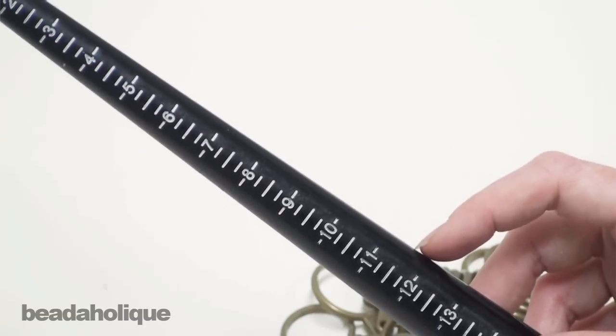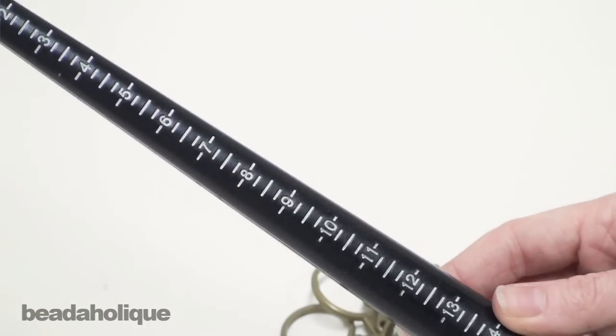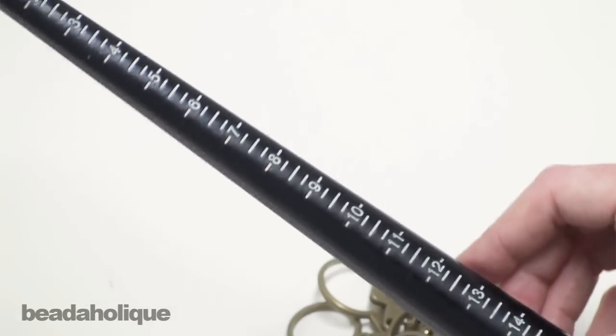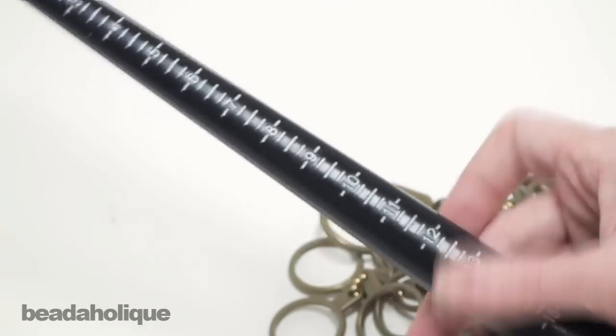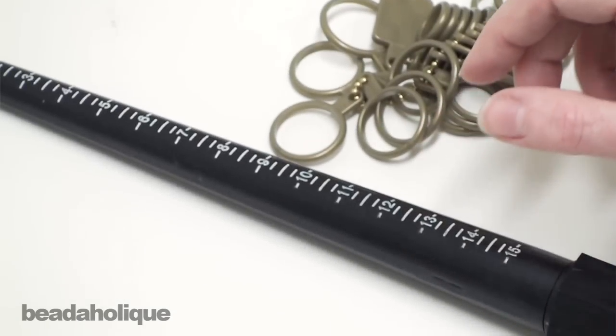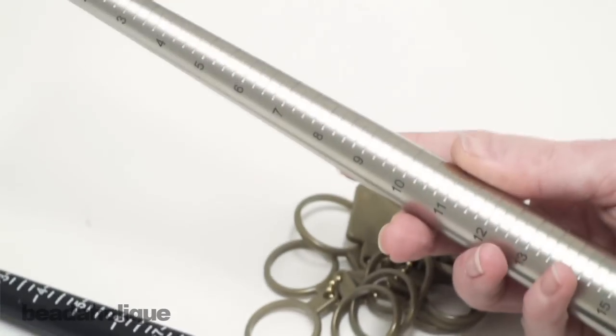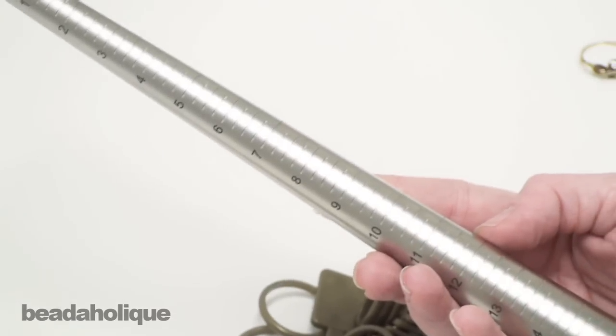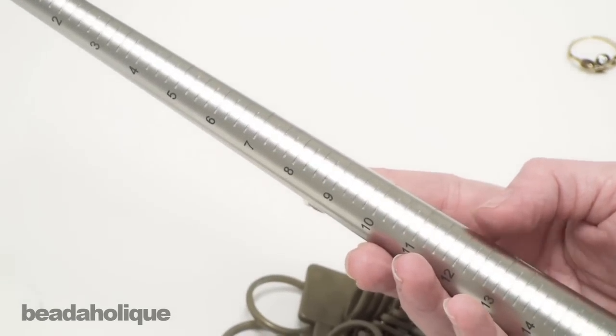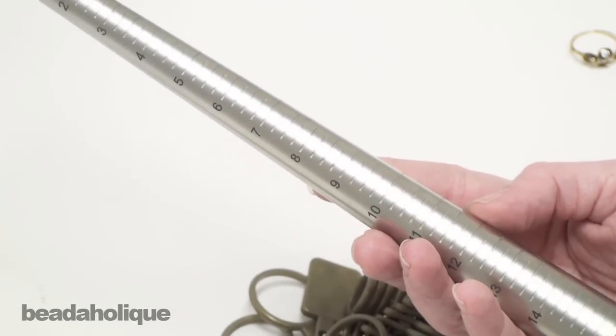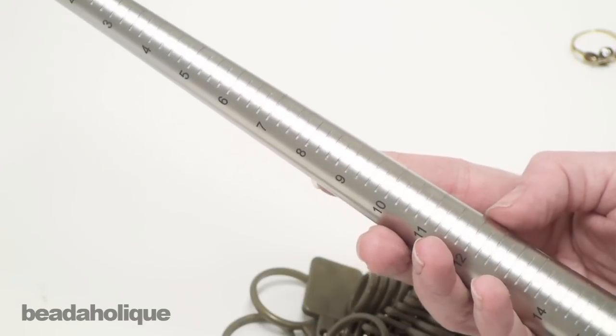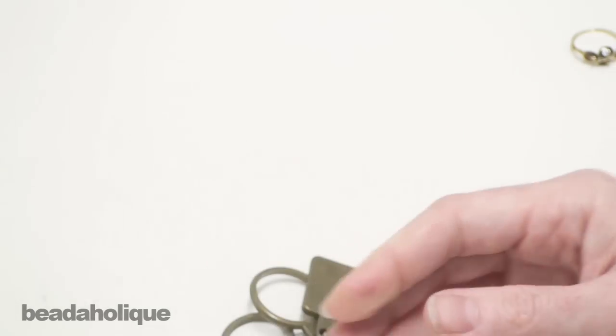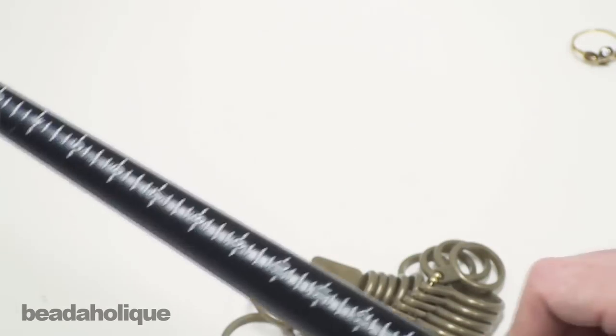Now this is a plastic ring mandrel. It's perfect for wire wrapping and wrapping filigree around it, anything where you're just using the pressure of your fingers to make the ring. Also available to you are steel mandrels. You'll want to purchase one of these when you start getting into metal work, anytime you're using a hammer, anything that exerts a lot of pressure and then you're going to want to switch over to the steel mandrel. But for a lot of projects that you'll make you'll just need the plastic one.